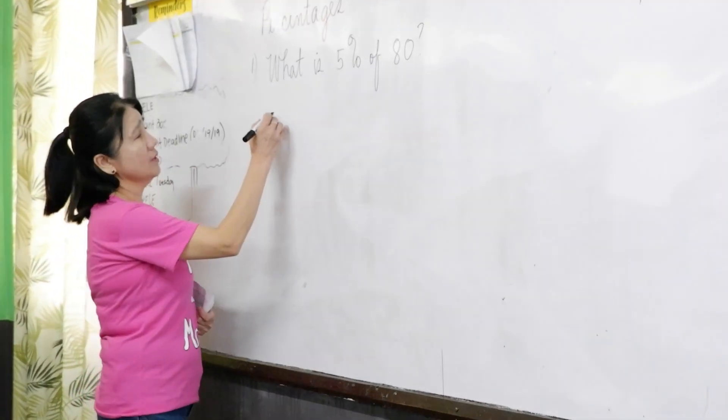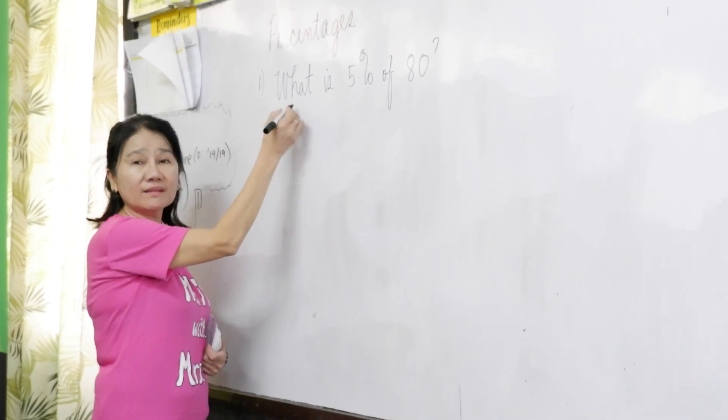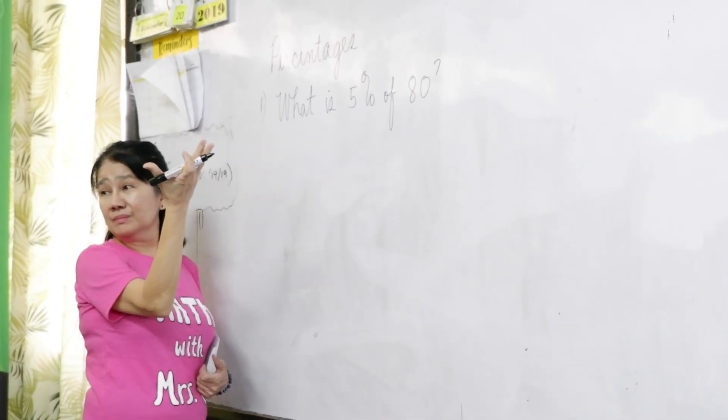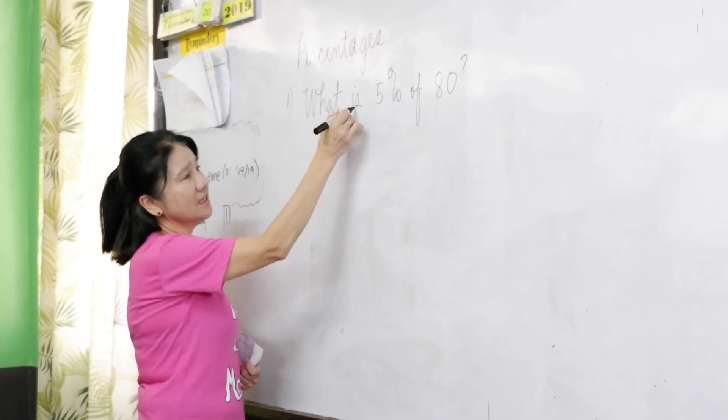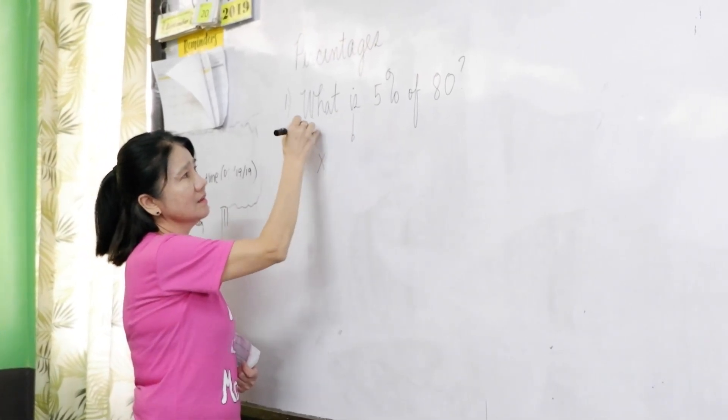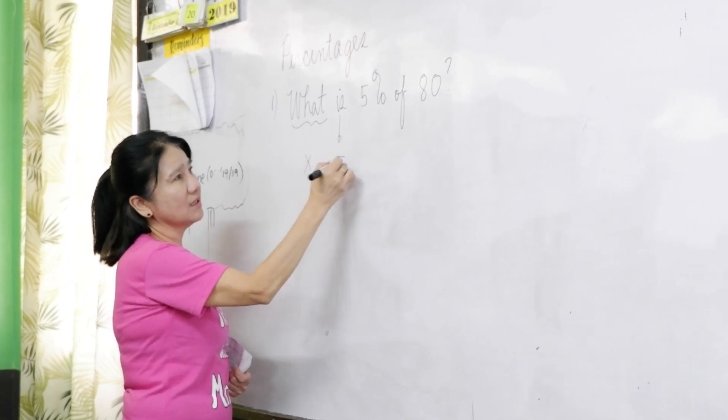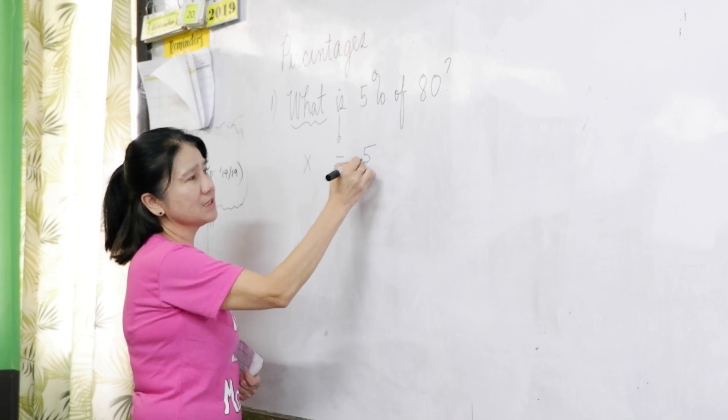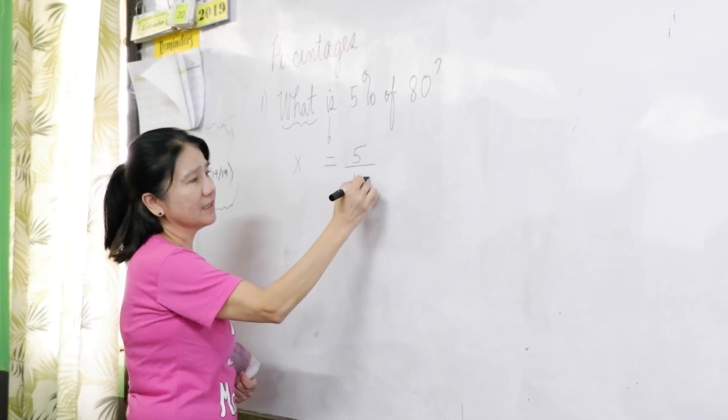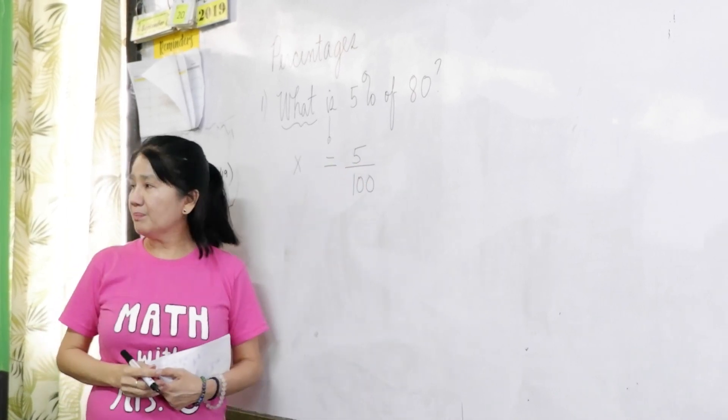So, we go what - we do not know, right? We're looking for this is the unknown, so X is - is equals 5%. Remember, 5% means 5 per 100. 5 per 100.